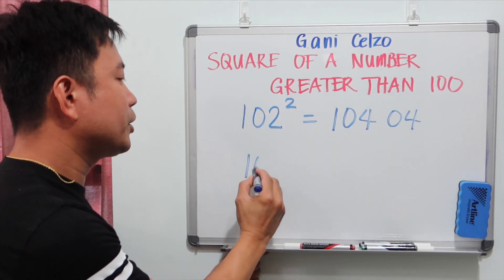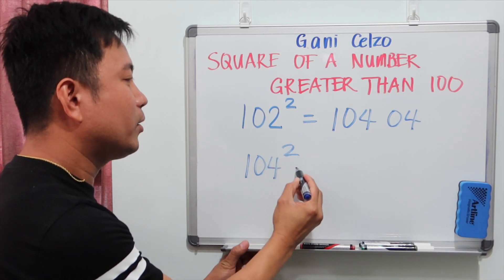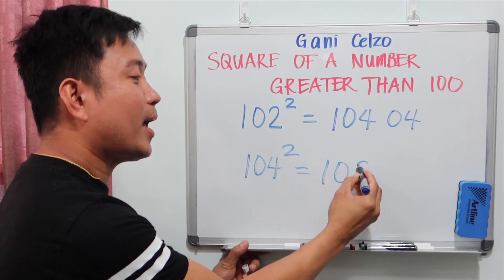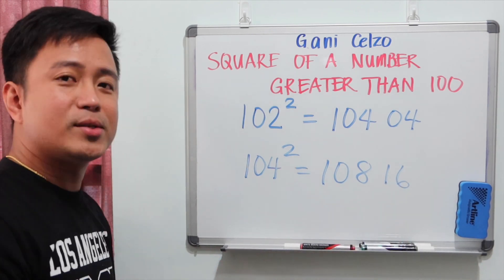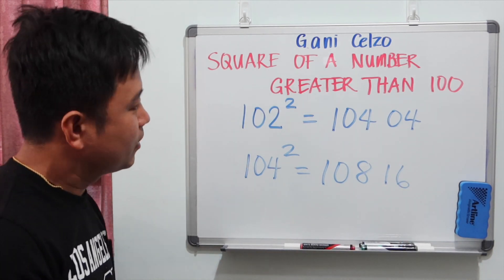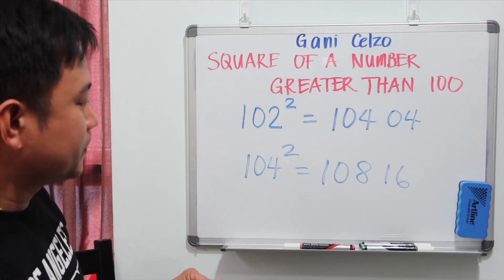If you have 104 to the second power, that's 108, 16. 10,816. So probably you'll see some patterns there.